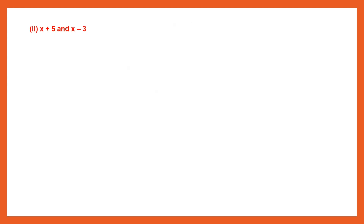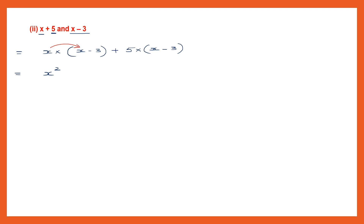Question 2: x plus 5 and x minus 3. Here again we take the first term of the first binomial. So this will be x into the whole of the second binomial, that is x minus 3, plus 5 multiplied into the whole of the second binomial. Now we multiply x into x first — x into x is x to the power of 2. Now we multiply x into minus 3. The sign will be minus and x into 3 will be 3x.